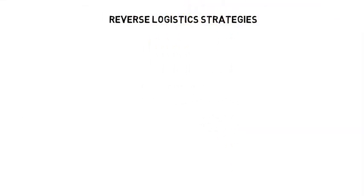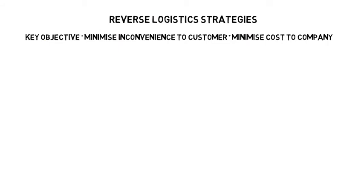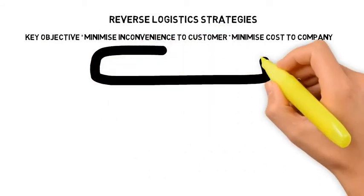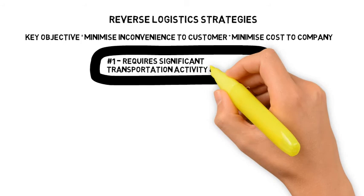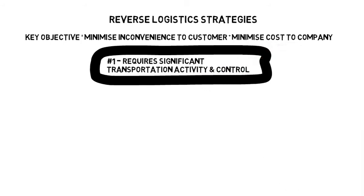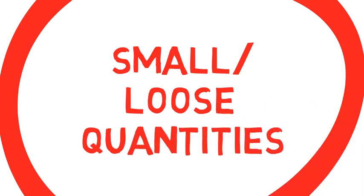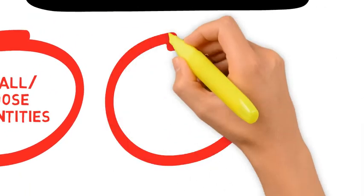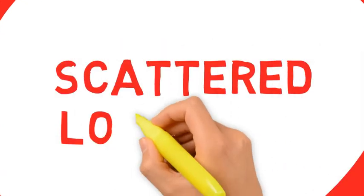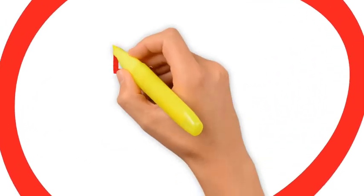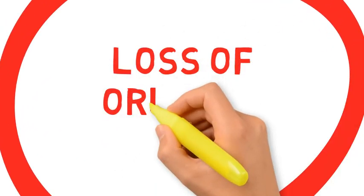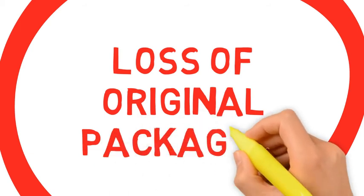The key objective of reverse logistics strategies is to minimise inconvenience to the end customer while minimising costs incurred by the company. This is an activity that requires significant transportation activity and cost control, due to the fact that goods are usually collected back in very small and loose quantities. They are also often collected from scattered locations, and most importantly, there is often a loss of original packaging, which requires extensive quality checks to ensure no defective goods are collected back.